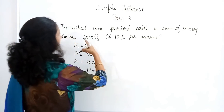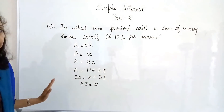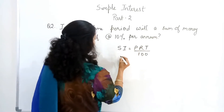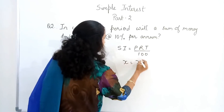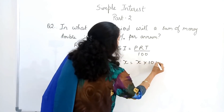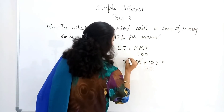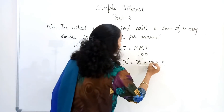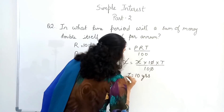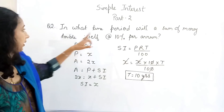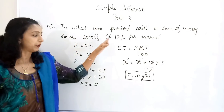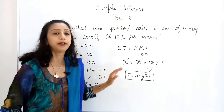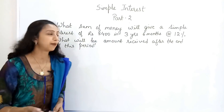We need to find the time period. Using SI = PRT/100, substituting SI = x and P = x: x = x × 10 × T / 100. The x cancels out, giving 10T/100 = 1, so T = 10 years. In 10 years, a sum deposited at 10% per annum earns interest equal to the principal, meaning the amount gets doubled.